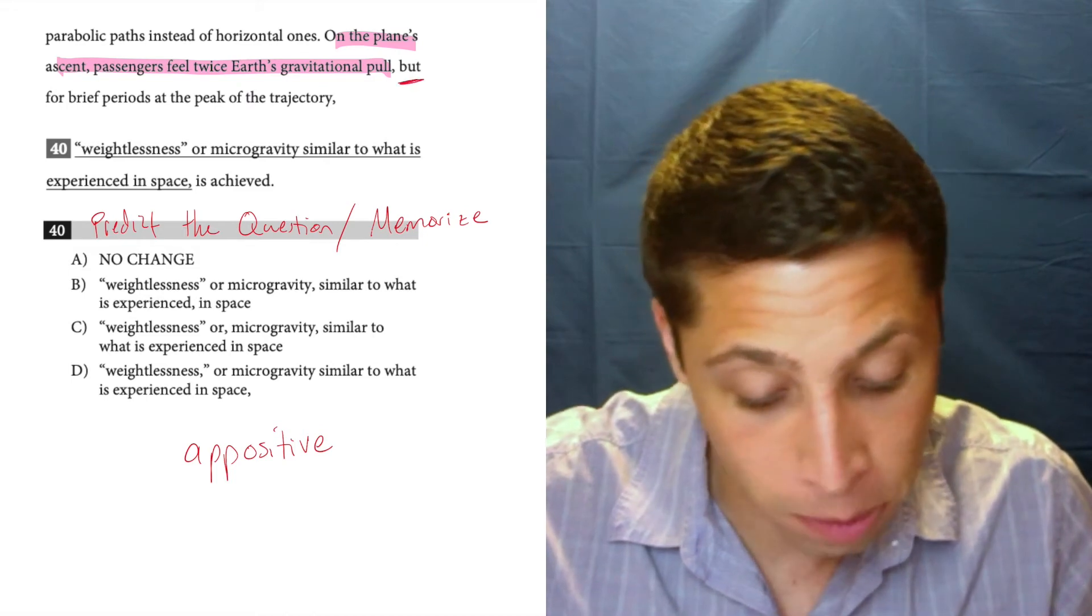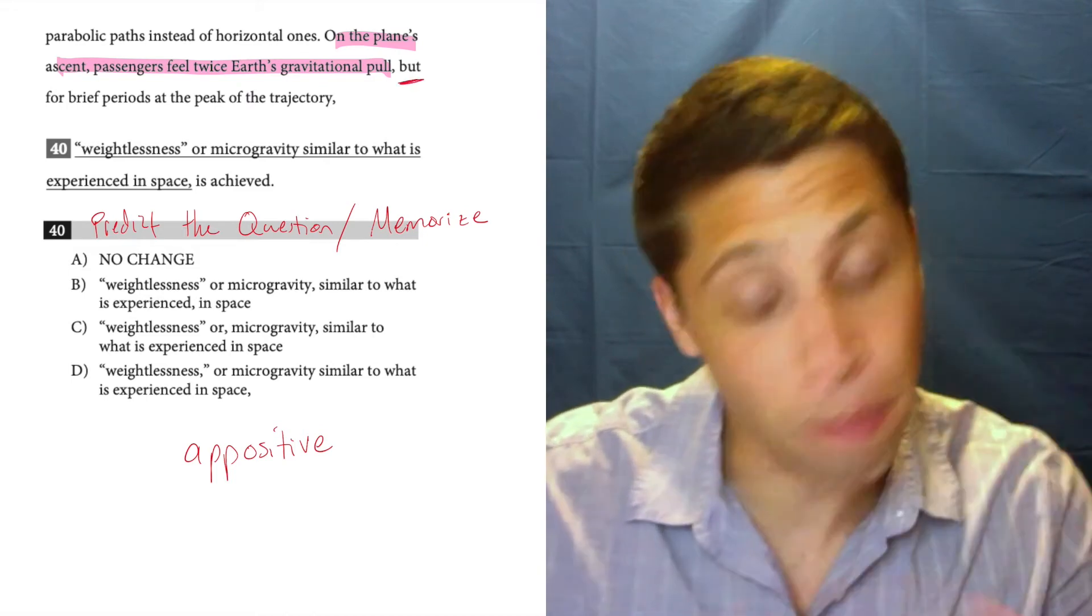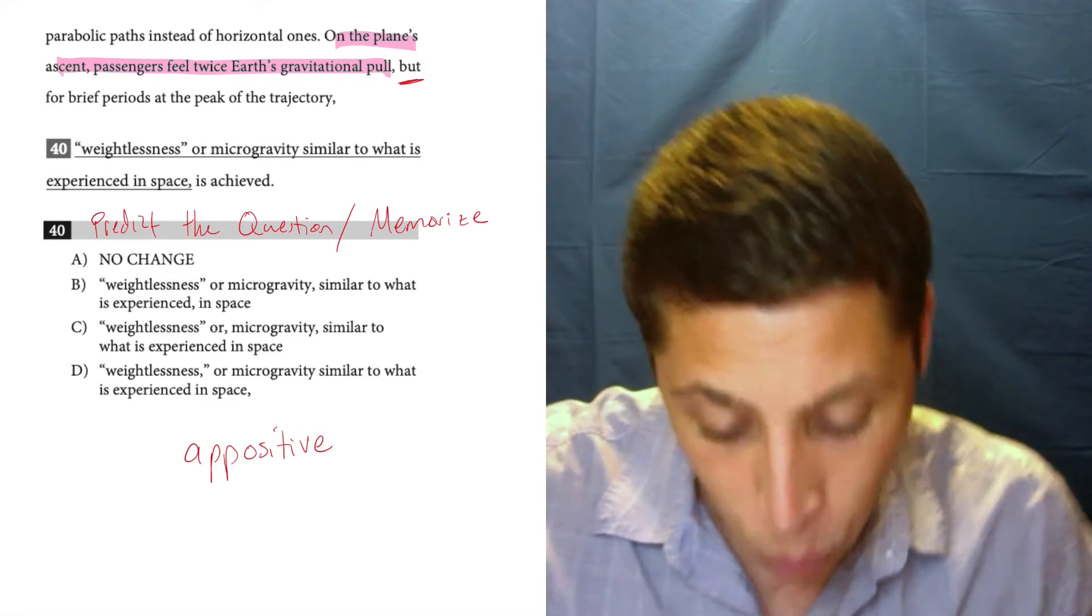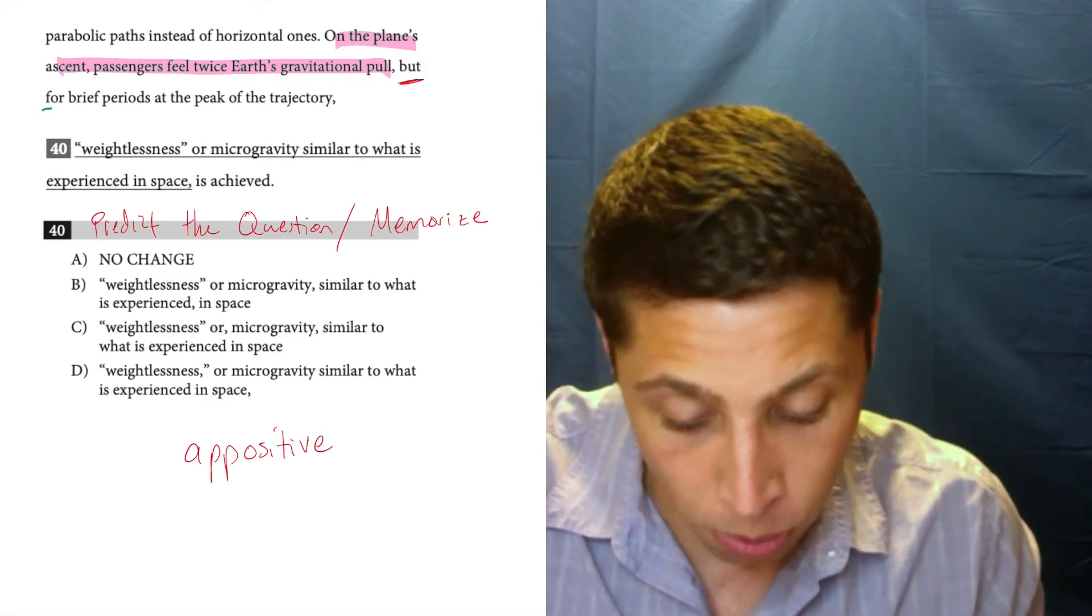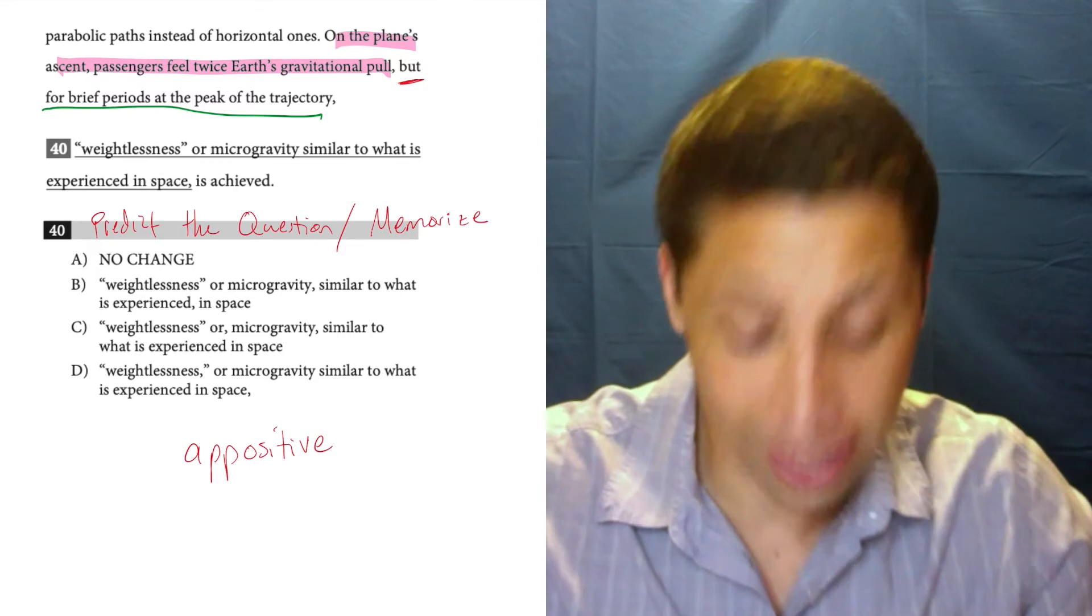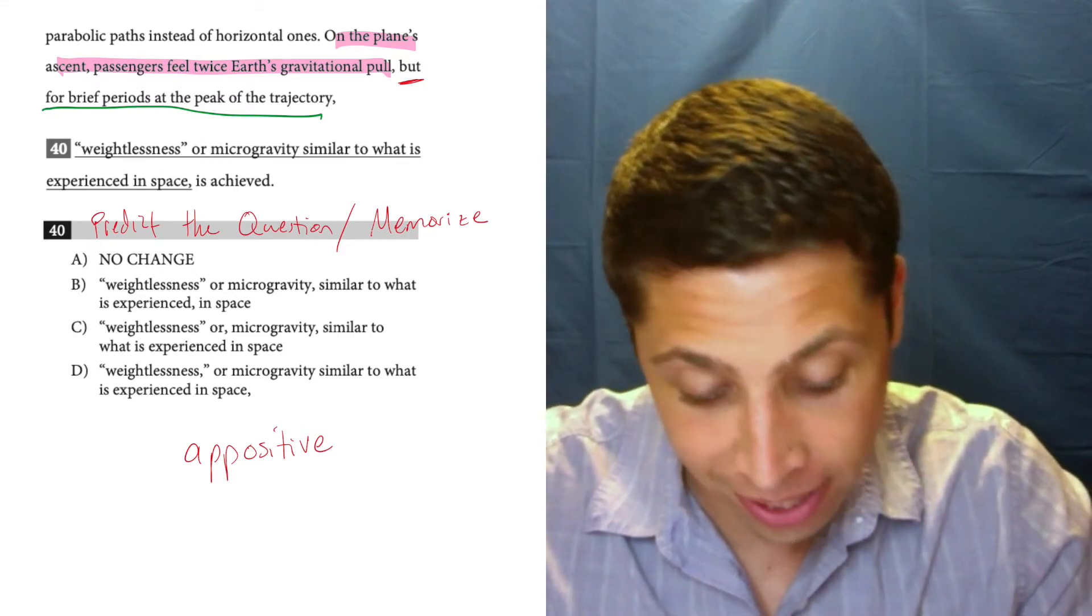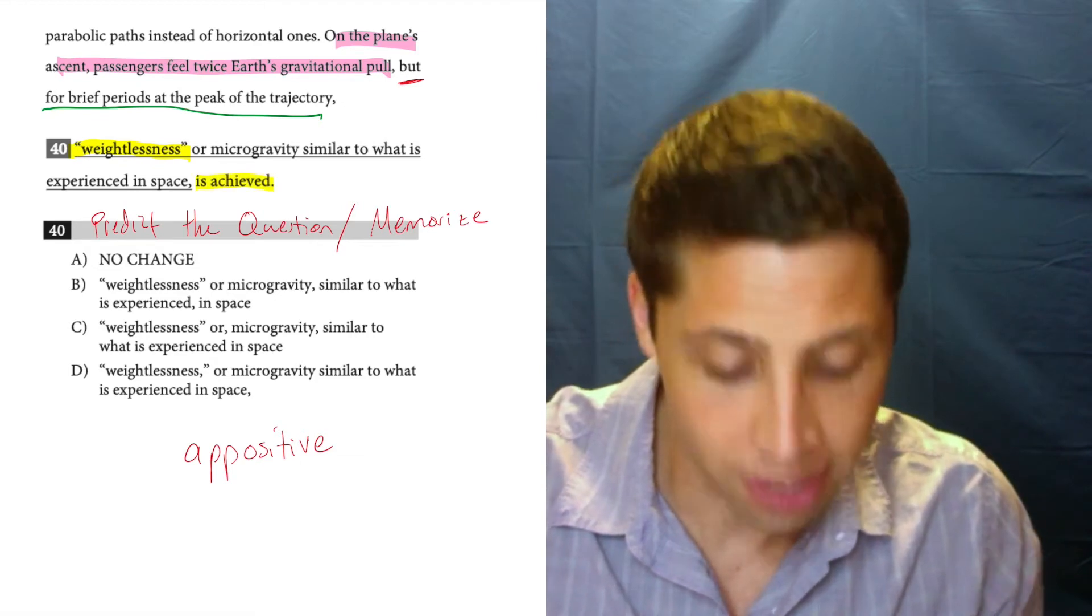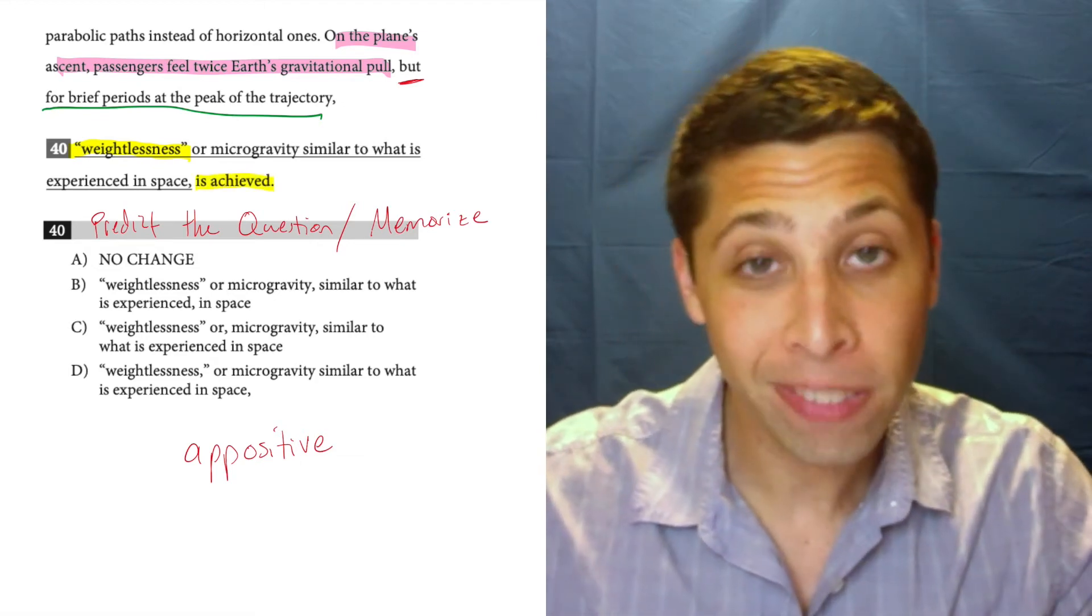The word but does a special thing. It's a conjunction. It lets us combine two sentences. Then we get to this part here, which is an intro to the second sentence. And the main second sentence is actually just this part, weightlessness is achieved. That's the sentence.